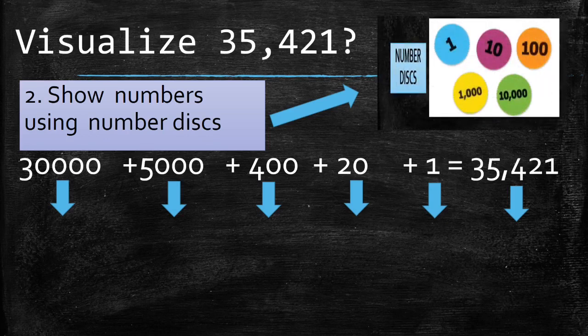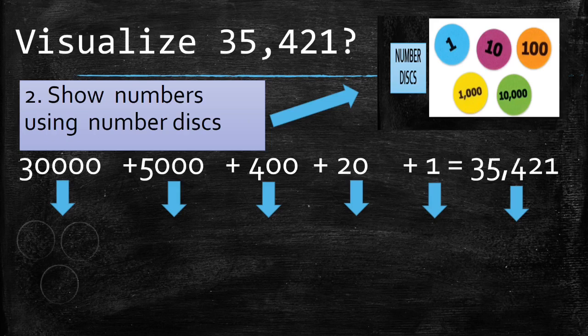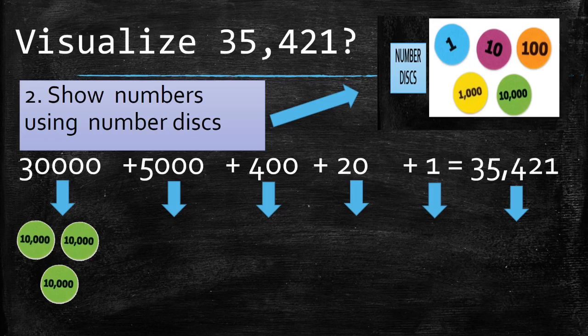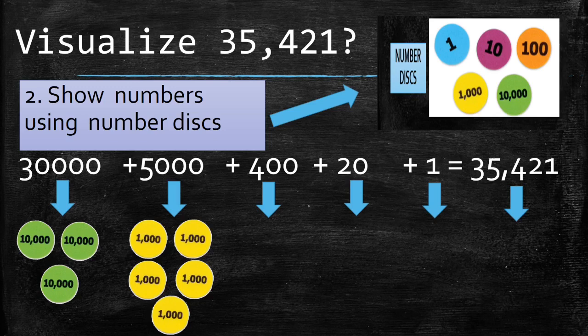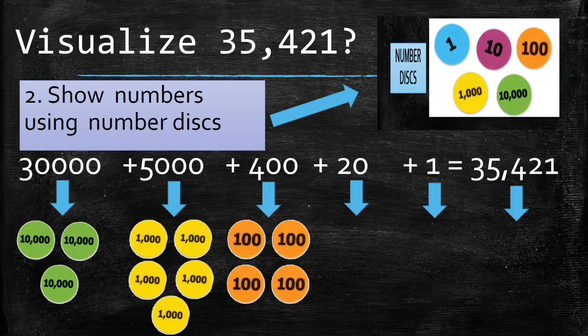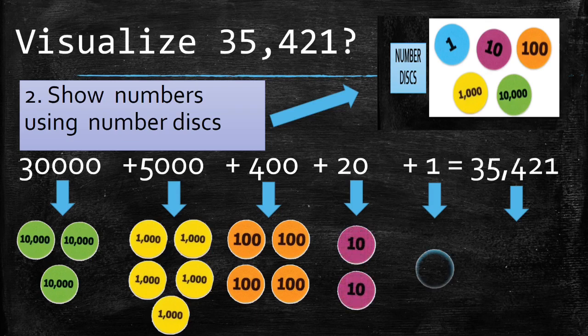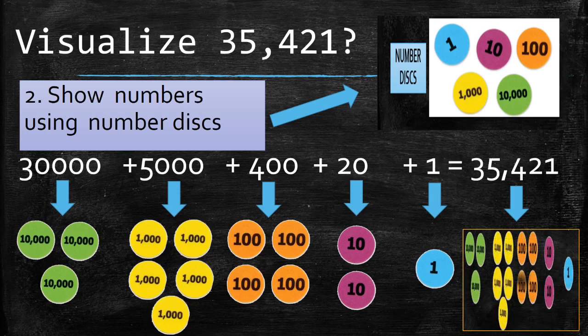How many 10,000s are we going to use? Three 10,000s. How many 1,000? Five 1,000, which is equivalent to 5,000. How about 400? There were four 100s. How many 10s to represent 20? There were two. And how about one? There were only one number disc, which is equivalent to 35,421.